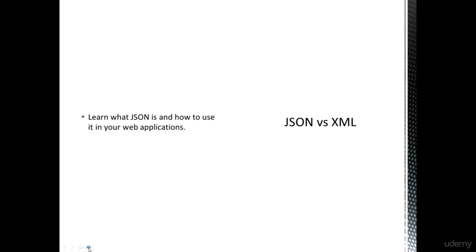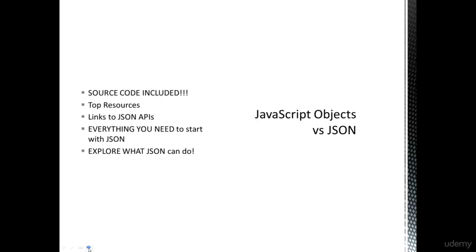We're also going to take a look at JSON versus XML, so if you've been using XML to bring data into your applications, try out JSON. It by far exceeds what XML can do. JSON is also human readable — it's easy to understand and easy to navigate through in order to get that data and content you want within your application.